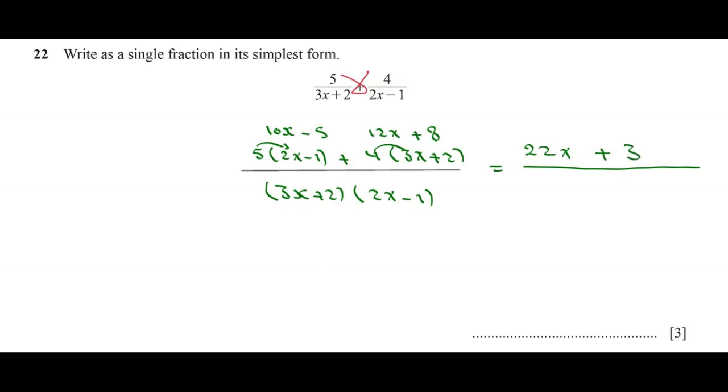Simplifying the denominator: 3x times 2x equals 6x squared, 3x times negative 1 equals negative 3x, 2 times 2x equals positive 4x, 2 times negative 1 equals negative 2. The answer is (22x + 3) / (6x squared + x minus 2) as the final answer. Thank you.